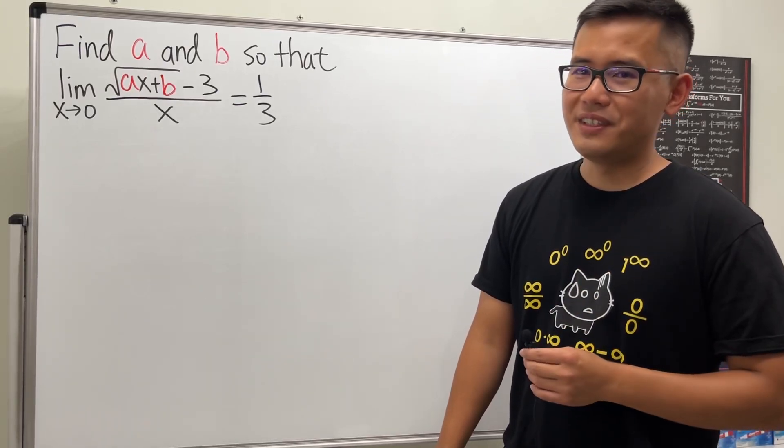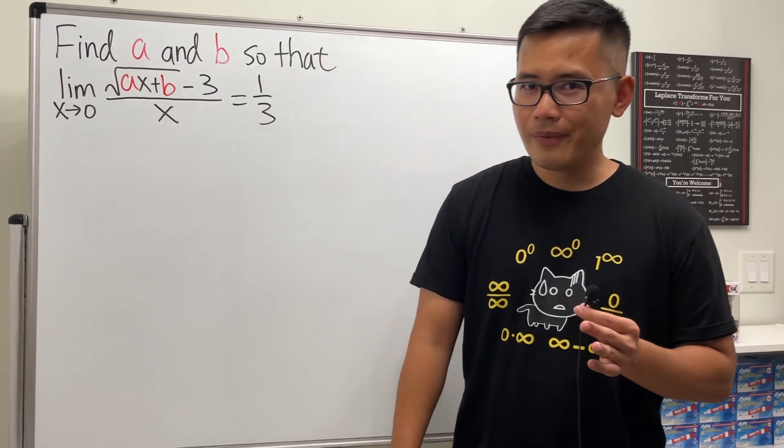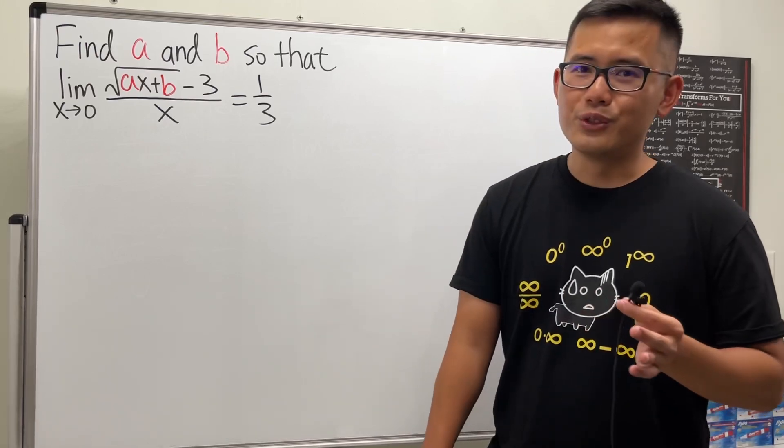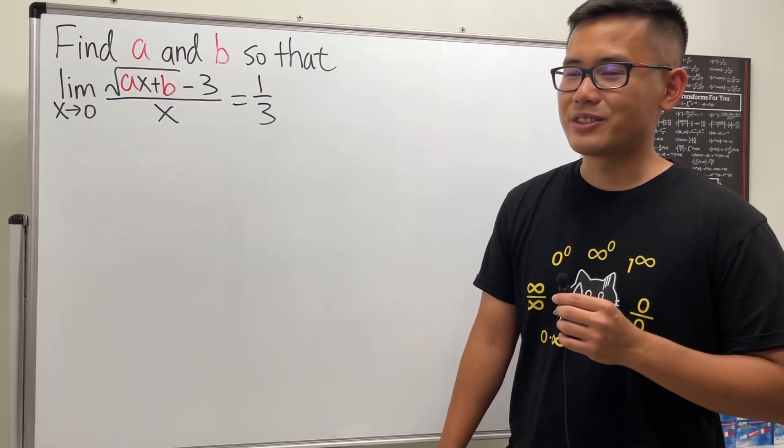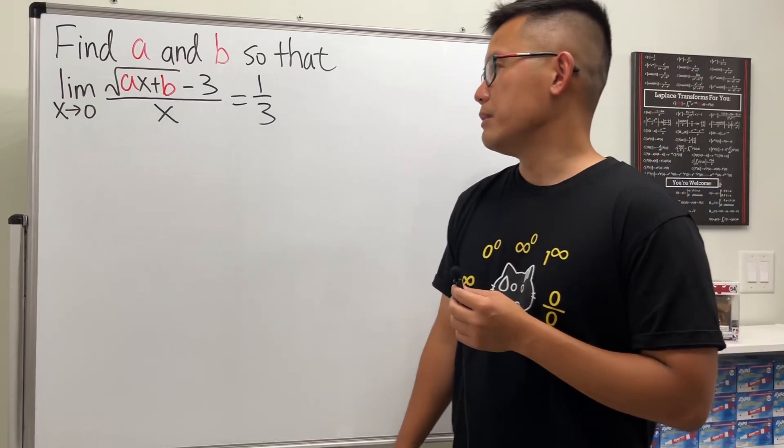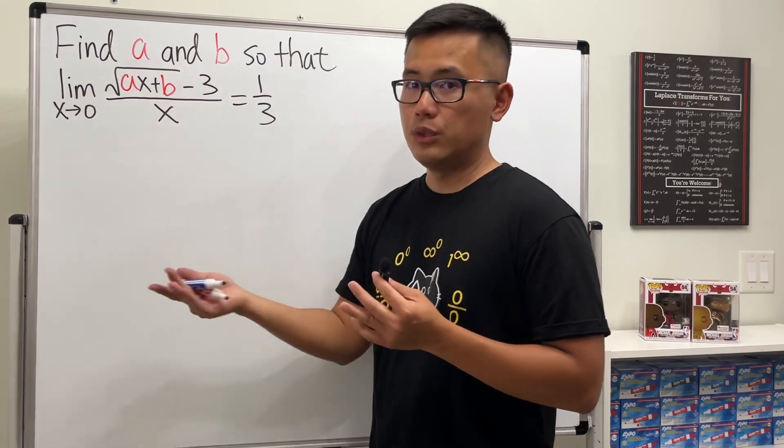Okay, so let's see, this is how I do it, and feel free to share your approach down in the comment section. I like to have a good habit: whenever we're doing limits, we should just bring the zero into all the x's and see what happens.